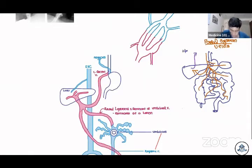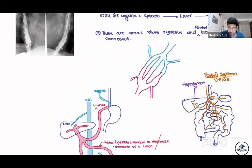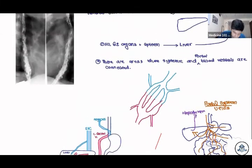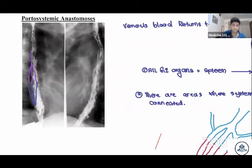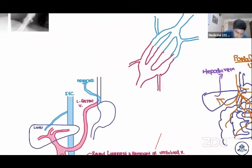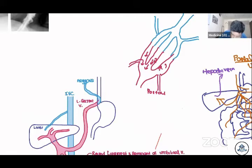Blood returns to the heart through the hepatic vein. This is the normal system. However, there are places — take the esophagus for example — where the systemic circulation and the portal circulation join. But the blood never mixes. If this is the portal system, the blood in it will never mix with the systemic blood.